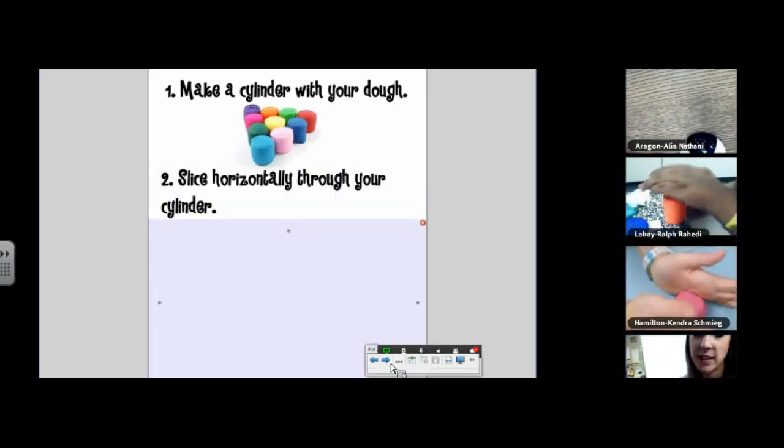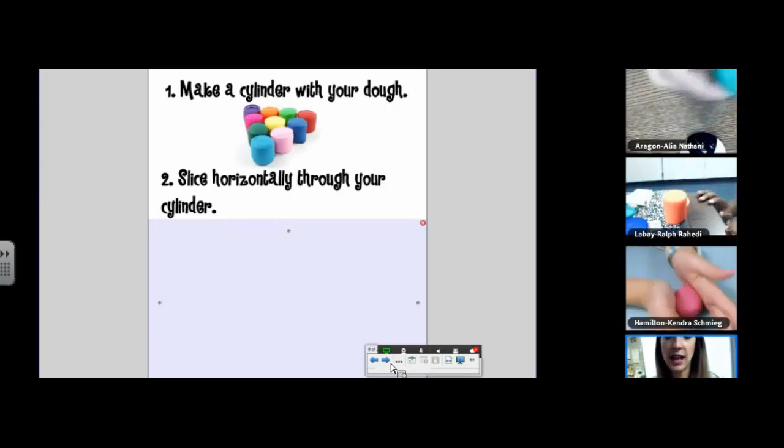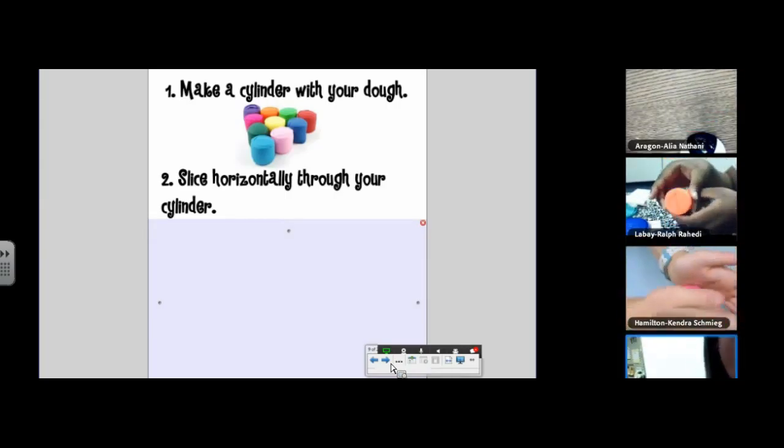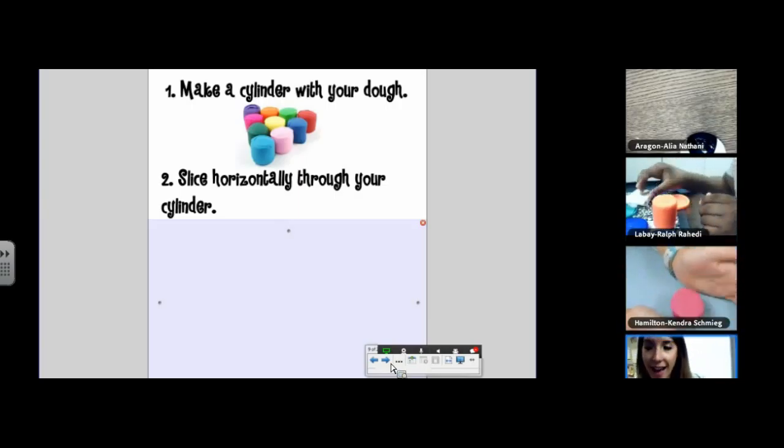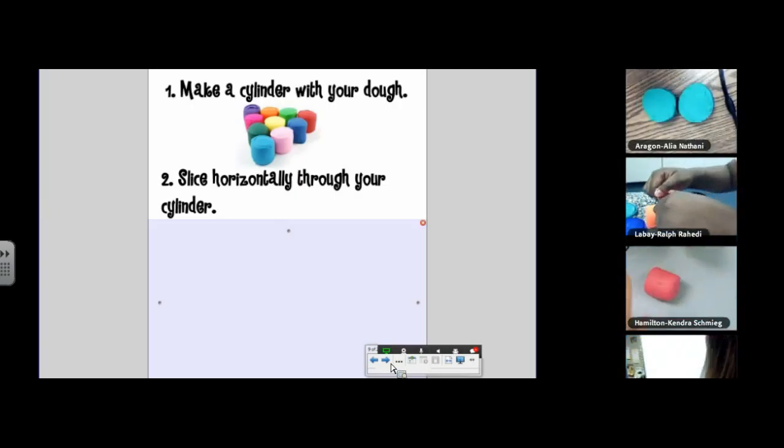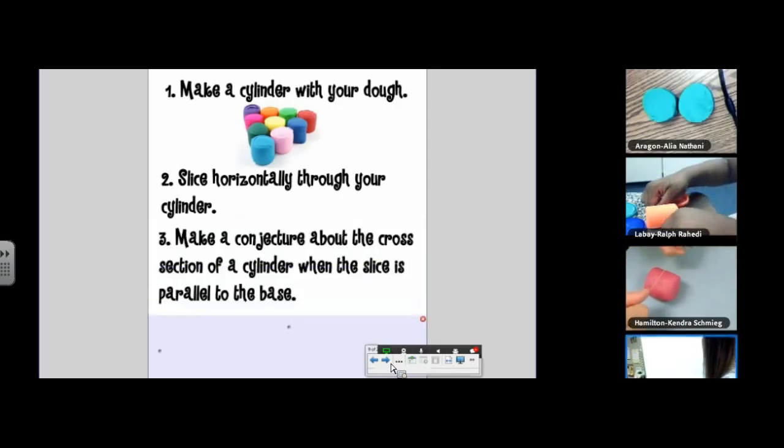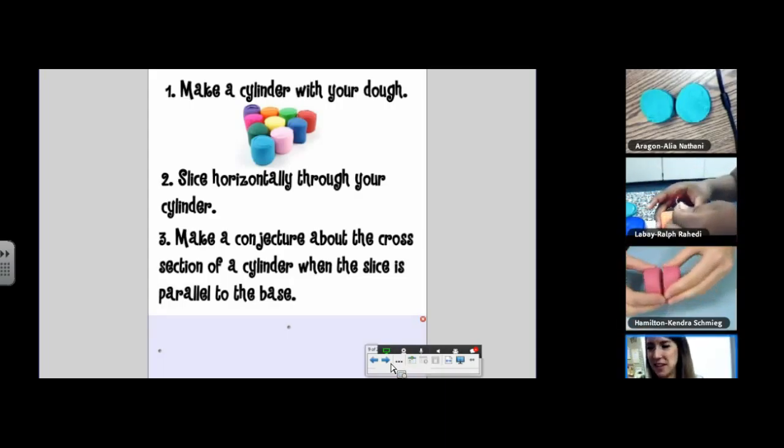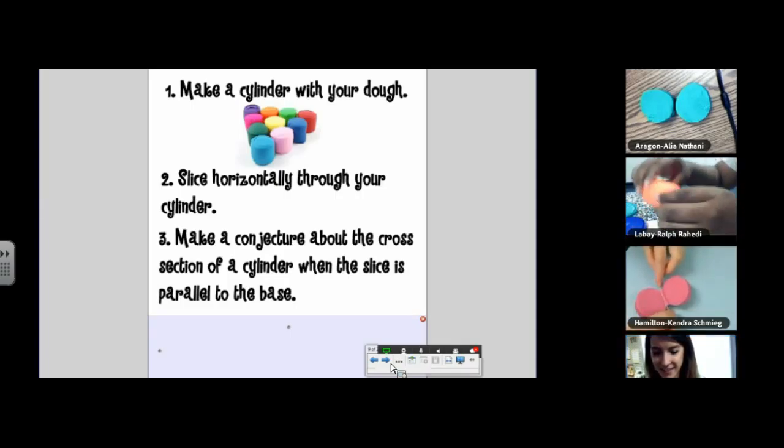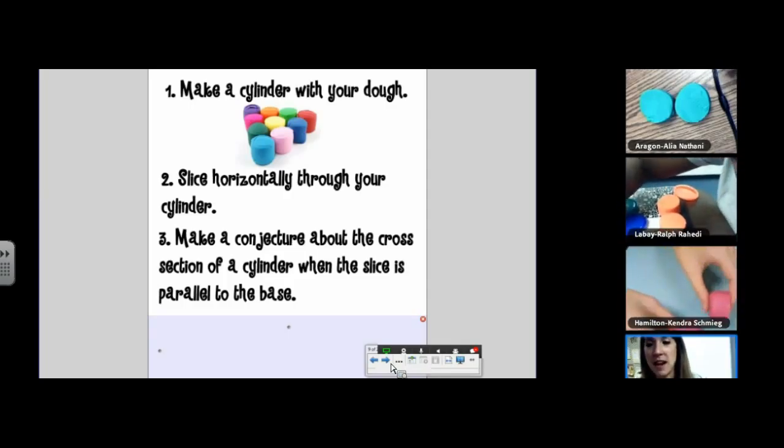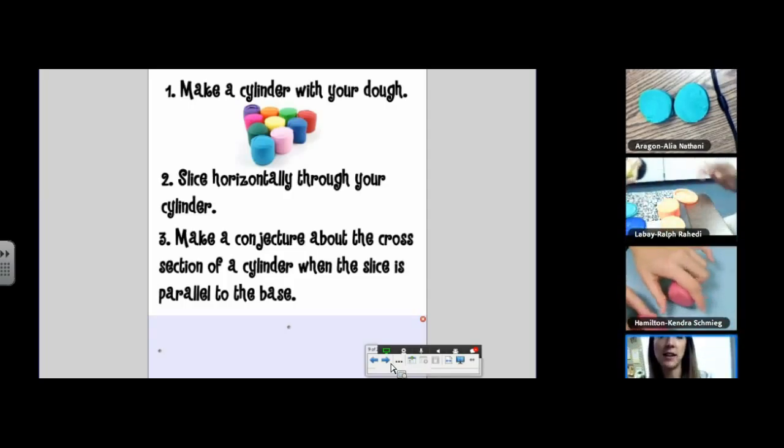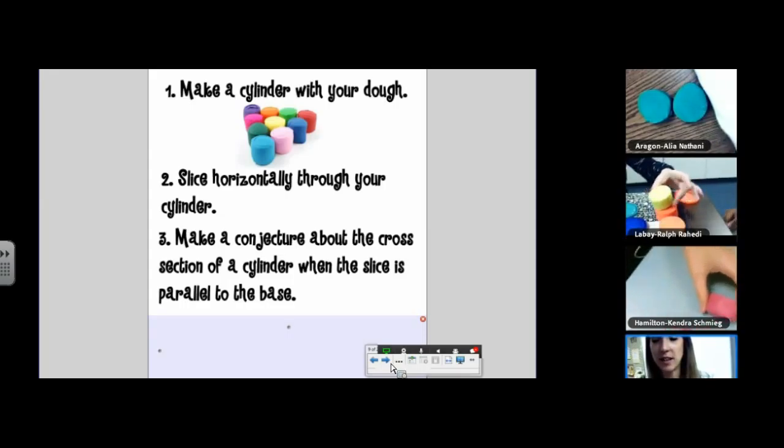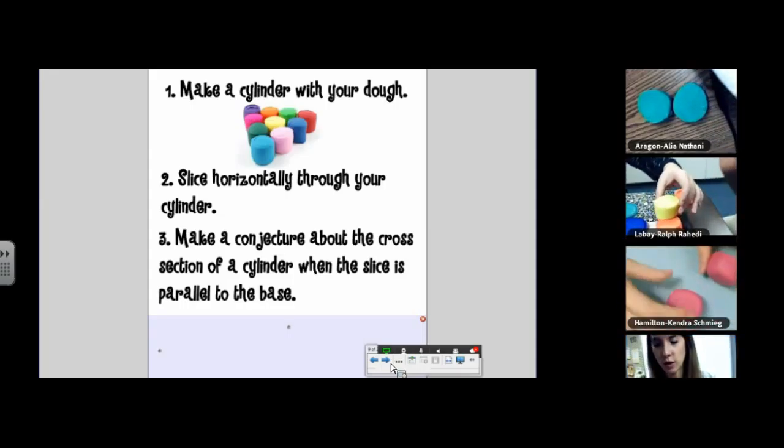So we're going to go basic to start with. Take your floss, and I want you to slice horizontally through the cylinder, a.k.a. I want you to slice parallel to the base. So make a conjecture about the cross-section of a cylinder when the slice is parallel to the base. What is your conclusion that you probably could have concluded without Play-Doh? What do you think? It's kind of like a logic statement. If my slice is parallel to the base, then the cross-section of my cylinder is a circle.